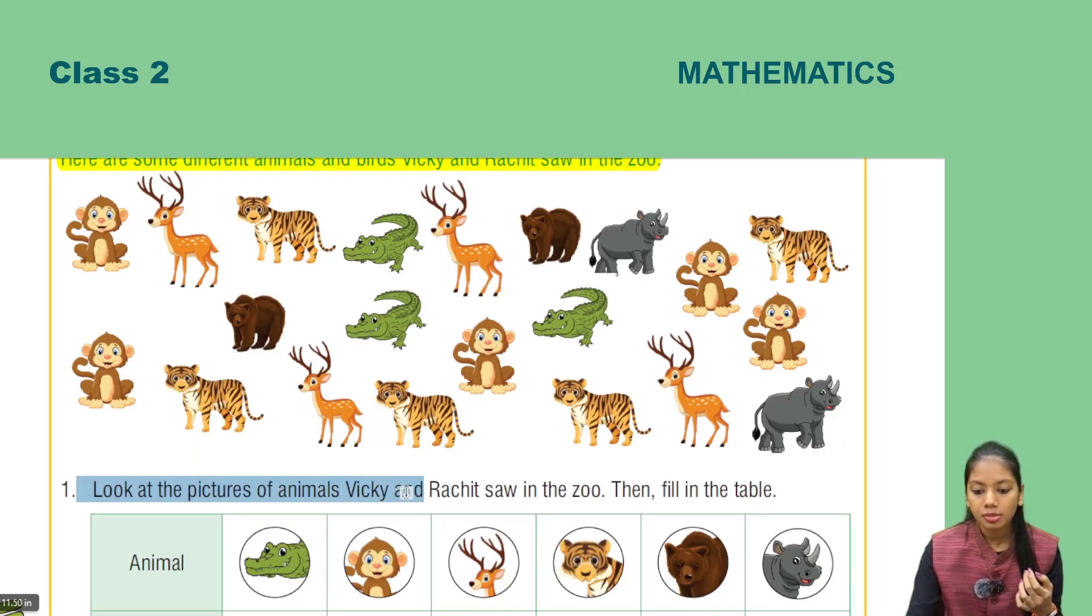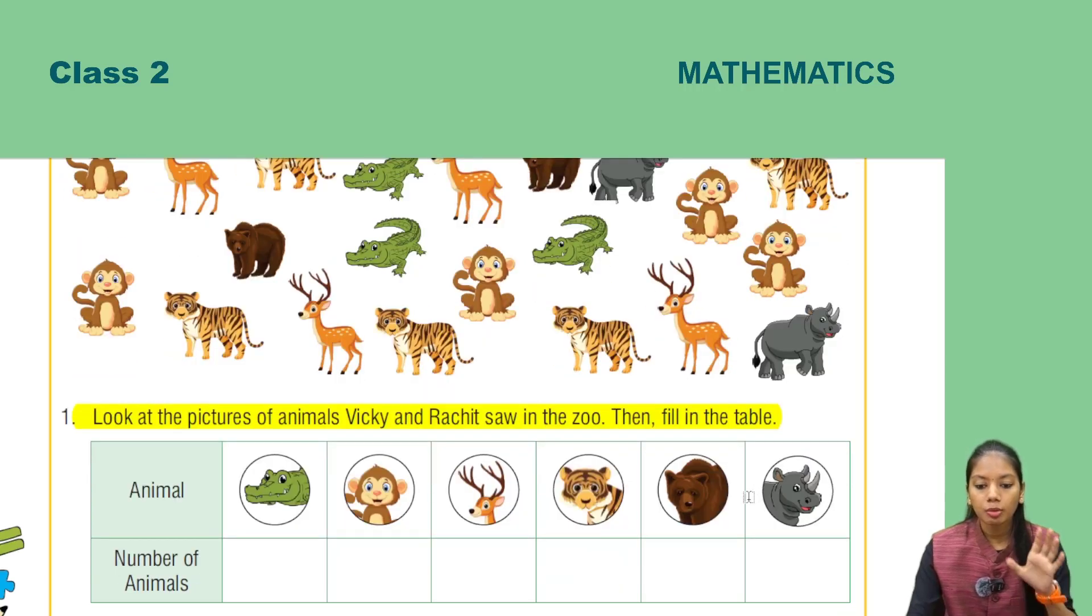Look at the pictures of animals Vicky and Rachid saw in the zoo, then fill in the table. So you have to fill in pictures according to the table here. You have to write the figure according to the number of animals. Count on this figure how many animals are there, how many birds are there, and fill them here.